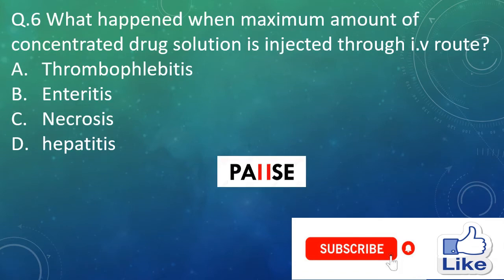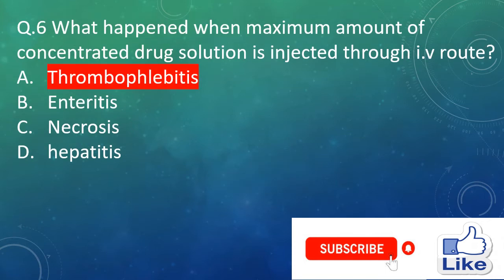Question 6. What happens when a maximum amount of concentrated drug solution is injected through IV route? Option A: thrombophlebitis, option B: enteritis, option C: necrosis, and option D: hepatitis. The right answer is option A, thrombophlebitis.